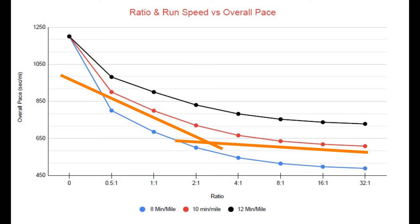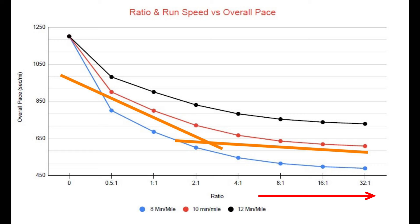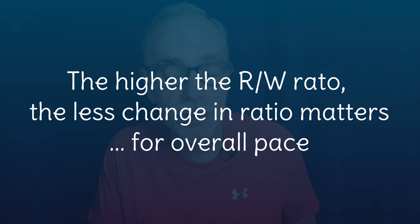The first observation is that the curves are not straight lines — they're steeper at early ratios and get very flat at higher ratios. At a zero ratio you never run and only walk, so all curves start at 1200 seconds per mile (20 minutes per mile). As you increase the ratio, the curve flattens because your overall pace approaches your running pace. For example, the red 10-minute line approaches 10 minutes per mile as ratio increases. The key takeaway: the higher the ratio, the less a change in ratio matters for overall pace.